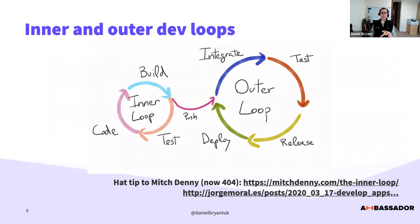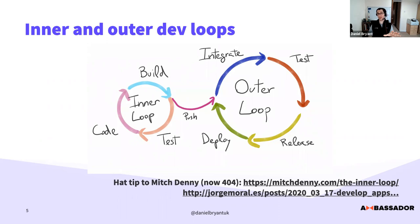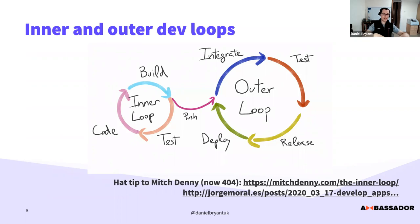Setting the scene: the inner and outer dev loop is critical to our workflow. In the inner dev loop, you're often unit testing with minimal dependencies and optimizing for fast feedback. Once you're happy, you push to the outer loop — where Jenkins or CircleCI takes over, you build an artifact, deploy, and run tests. If you're building containers, the outer loop typically involves building a container and deploying into Kubernetes.